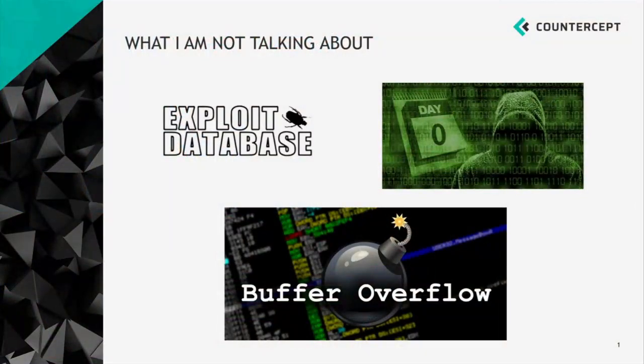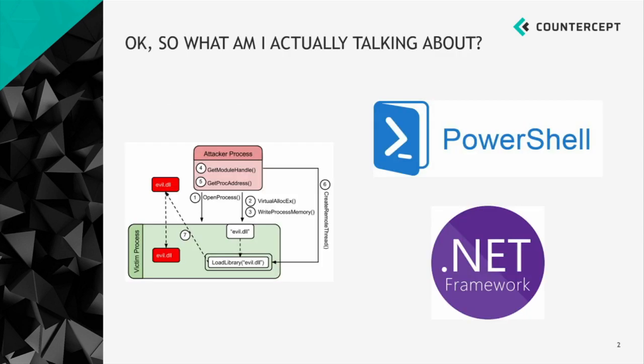Just to clear one thing up in case anyone is confused over what this might be. When I say code injection, I'm not talking about exploits here — buffer overflows, that kind of thing. I'm not talking about anything that involves crossing a privilege boundary. I'm purely talking about essentially hosting your malicious code, your implant in another process, or doing any sort of form of dynamic code execution that keeps things off of disk. So we're talking about cross-process access mechanisms for injecting native code, or dynamic execution methods within frameworks like PowerShell or .NET.